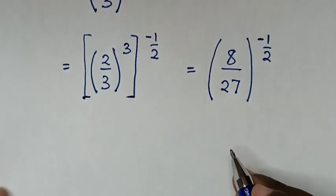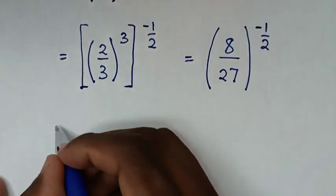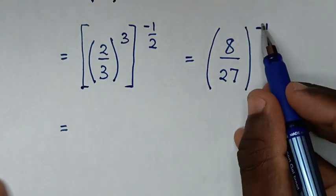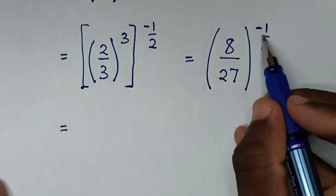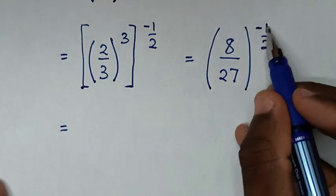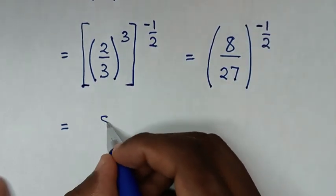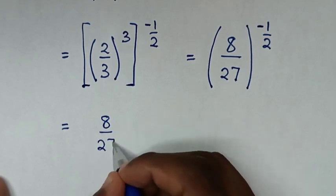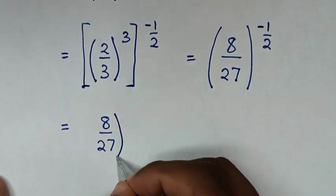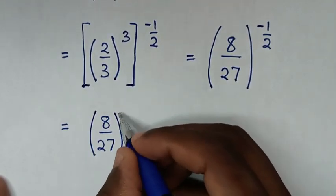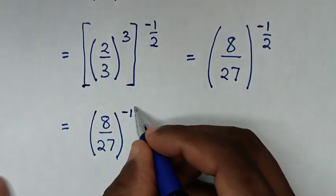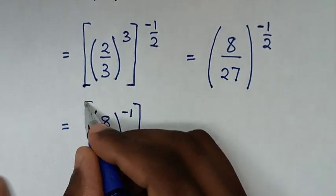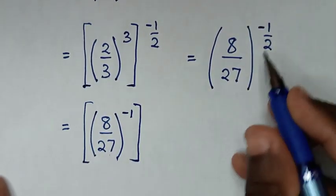Then in the next step it will be equal to — in here we will take this power of negative 1 inside the bracket — so it will be 8 over 27, bracket power of negative 1, then bracket power of half.